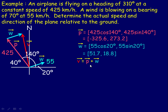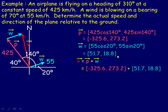Now, in order to get the velocity vector of the plane, it's just the sum of the plane's direction vector and the wind vector. We add them by adding the components: we add the x-component of the P vector and the x-component of the W vector, and then add the y-components together. Adding negative 325.6 and 51.7 gives negative 273.9. Adding 273.2 and 18.8 gives 292. So those are the components of the resultant red vector: [−273.9, 292].